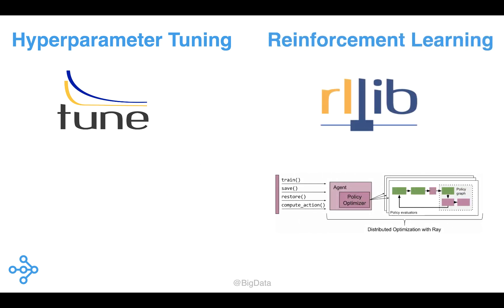Tune is now one of the more popular open source libraries for hyperparameter tuning. RLLib is an open source library for reinforcement learning that offers both high scalability and a unified API for a variety of applications. It is already being used in several enterprises. For example, JP Morgan uses RLLib to power electronic trading models. As we start seeing more applications and use cases for reinforcement learning, we expect RLLib to attract a large share of developers needing to integrate reinforcement learning into their applications.